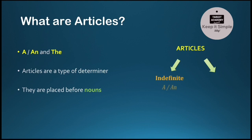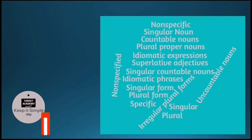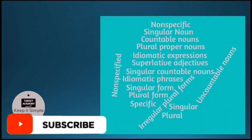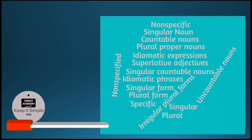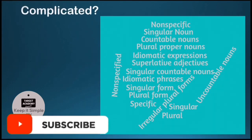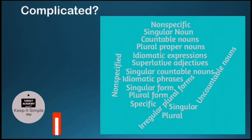Articles are classified as indefinite and definite. The indefinite articles are A and AN. The is a definite article. Now when you first read about articles, you will encounter complicated words like superlative adjectives, singular countable nouns, irregular plural forms, idiomatic phrases, etc. But not to worry.